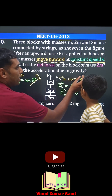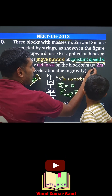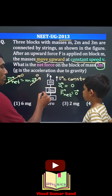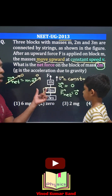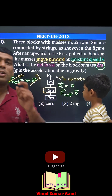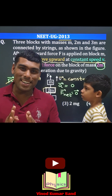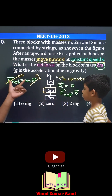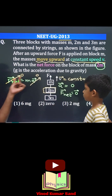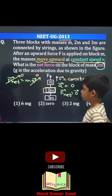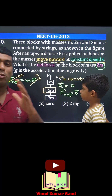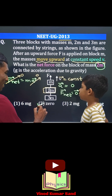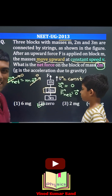The question asks for the net force on the object having mass 2M. For 2M, the velocity is constant, which means acceleration is zero. Acceleration zero indicates that the net force on 2M is zero. The correct answer is zero.